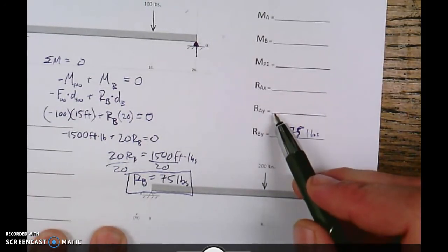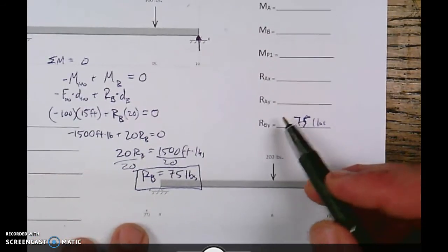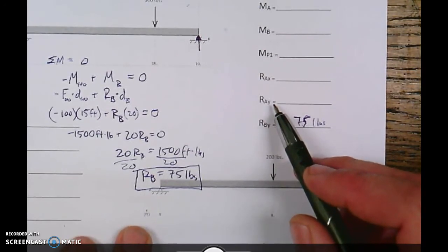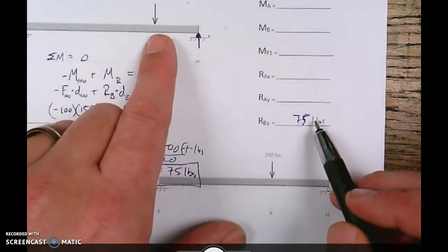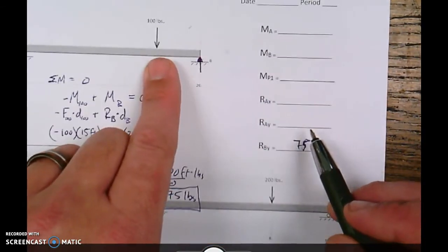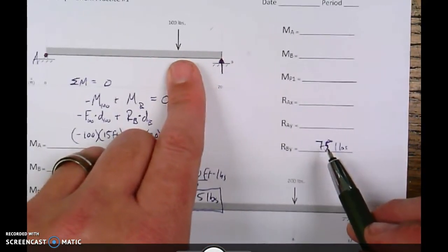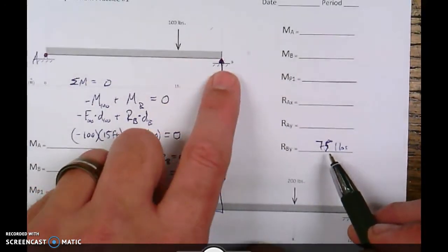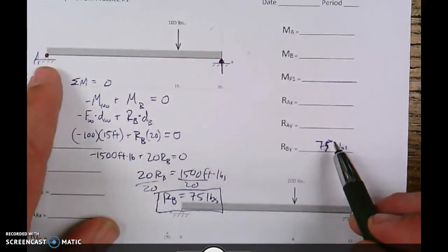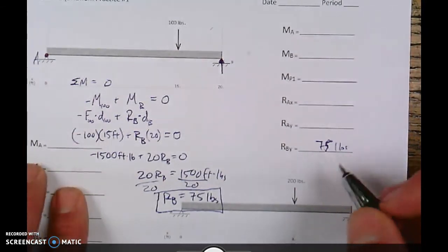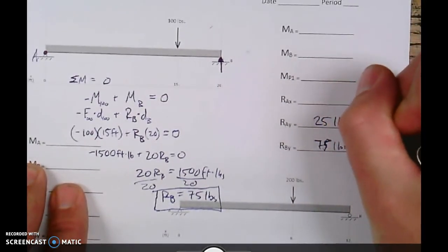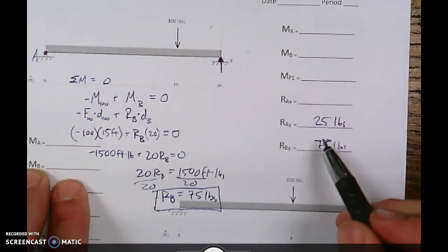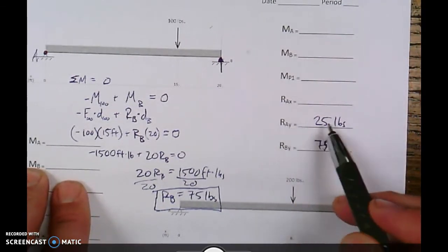Now, the next one up, I'm kind of working backwards here, is reaction force A. Reaction force A. Well, the total downward force we said is 100 pounds. So, our total up has to also equal 100 pounds. Well, if 75 is held up by B, how much should be held up at A? Well, 100 minus 75. So, we need 25 pounds of force acting in the Y dimension at point A.